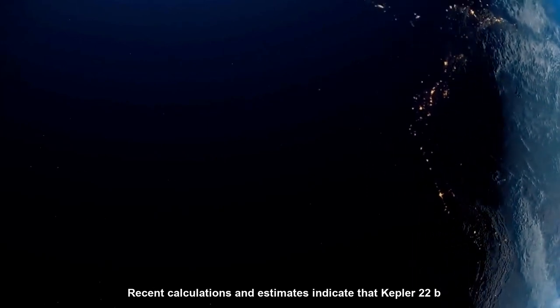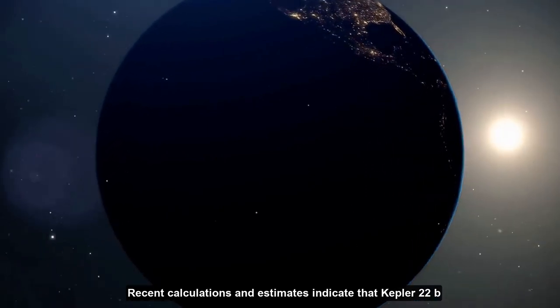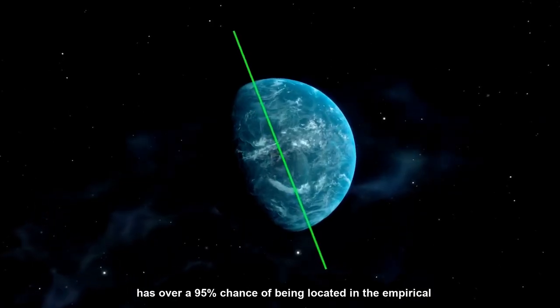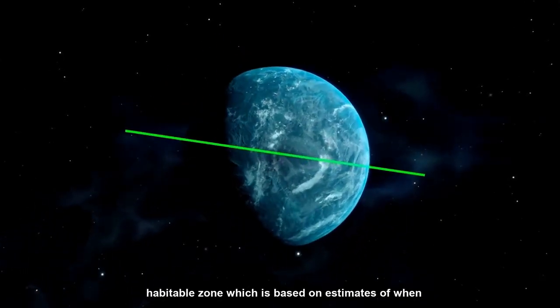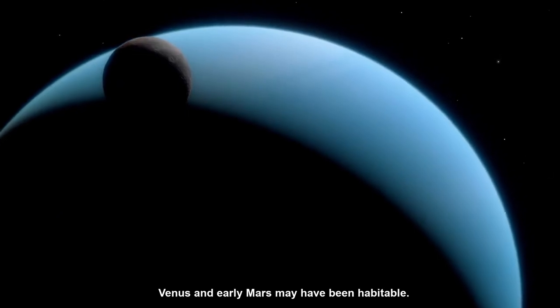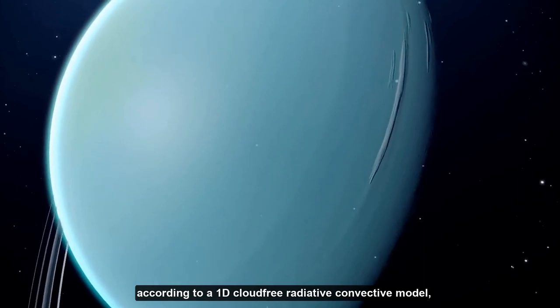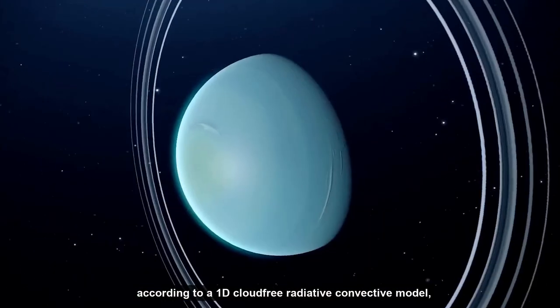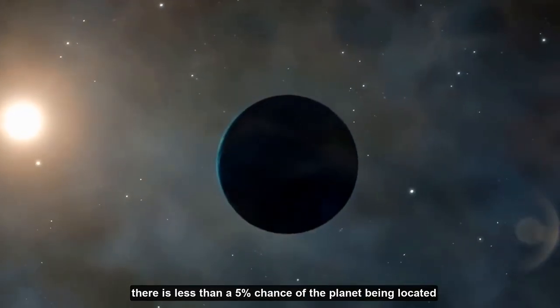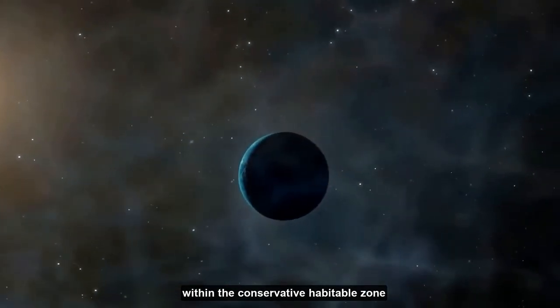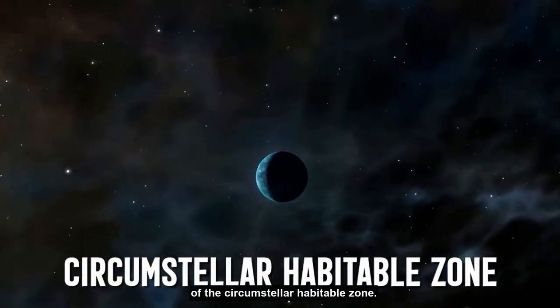Recent calculations and estimates indicate that Kepler-22b has over a 95% chance of being located in the empirical habitable zone, which is based on estimates of when Venus and early Mars may have been habitable. However, according to a 1D cloud-free radiative convective model, there is less than a 5% chance of the planet being located within the conservative habitable zone of the circumstellar habitable zone.